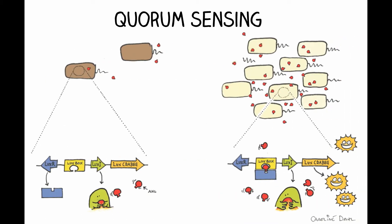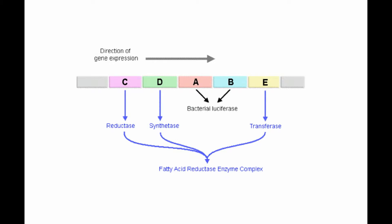But with increased density, enough autoinducers diffuse across cell membranes to activate the lux operon for the emission of light. This operon is transcribed and translated to synthesize a fatty acid reductase enzyme complex from lux C, D, and E, and luciferase from lux A and B.